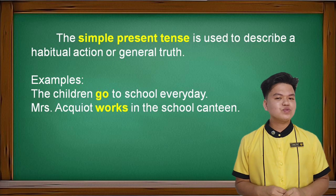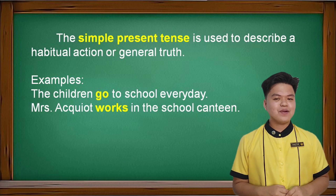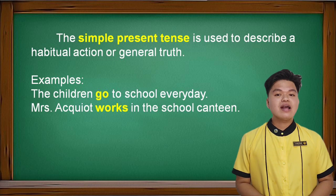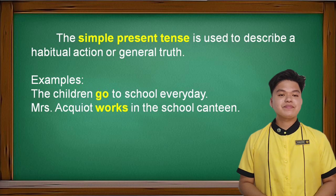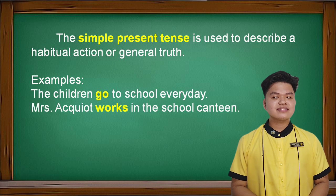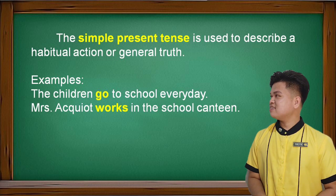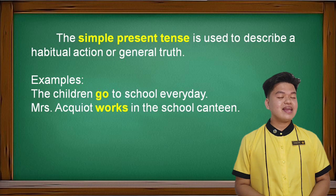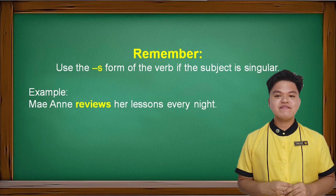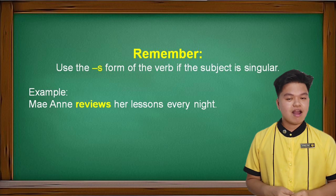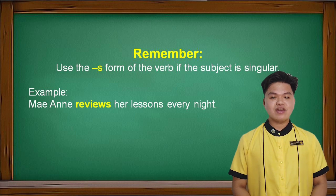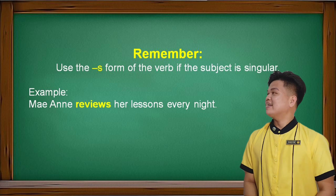The second one is the simple present tense. It is used to describe a habitual action or general truth. For example: the children go to school every day — 'go' is the simple present tense because it is happening. Next: Mrs. Acute works in the school canteen — the verb is 'works,' in simple present tense. Remember: use the S-form of the verb if the subject is singular. For example: Mayan reviews her lessons every night — the subject is singular, that's why we use 'reviews.'